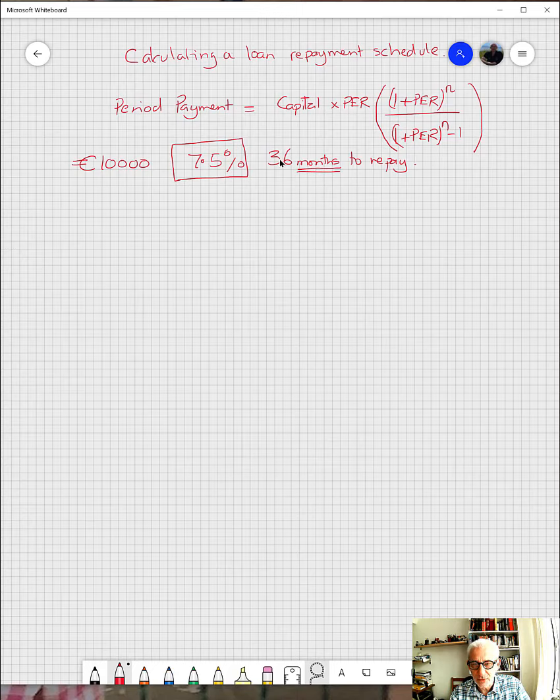Remember that the percentage can be written in this way: one point oh seven five is exactly the same as a seven point five percent interest rate, and the capital is this number here.